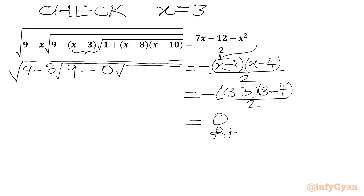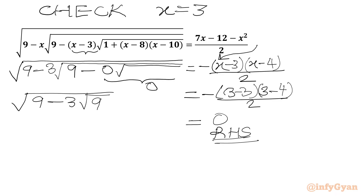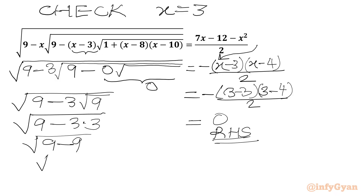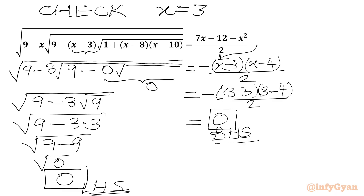Now we have to only make sure LHS should be 0. So this product is 0, so LHS is square root of 9 minus 3 times square root of 9. This will be equal to square root of 9 minus 3 times 3, which equals square root of 9 minus 9, which equals square root of 0, which is 0. So our LHS is 0. Our RHS is also equal to 0. That means our solution x equals 3 is true and verified.